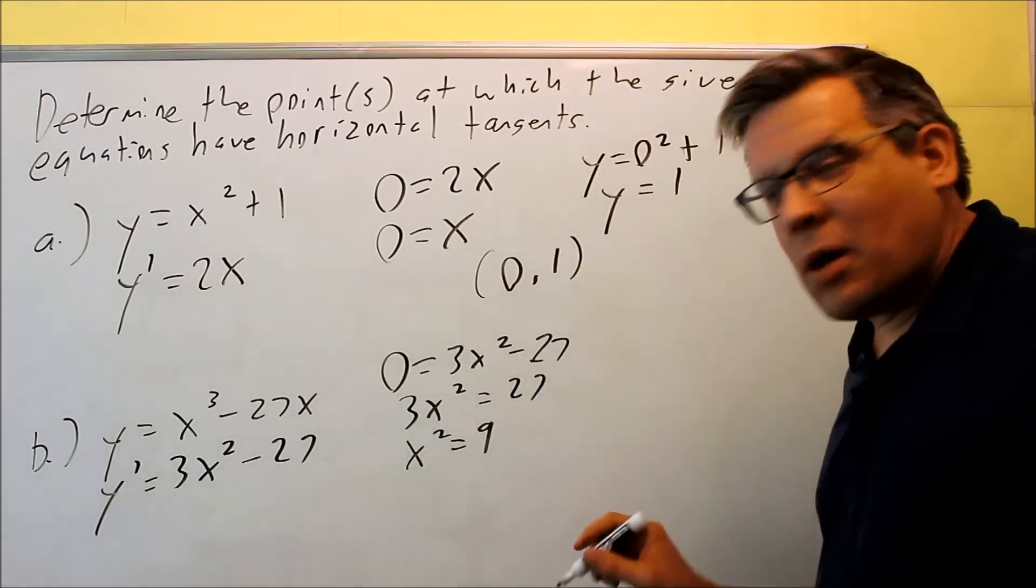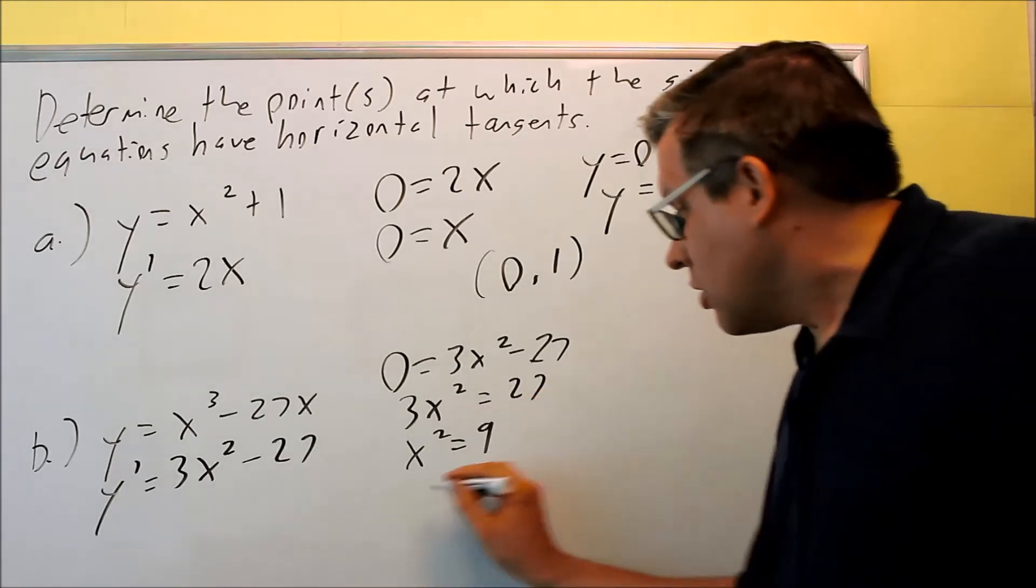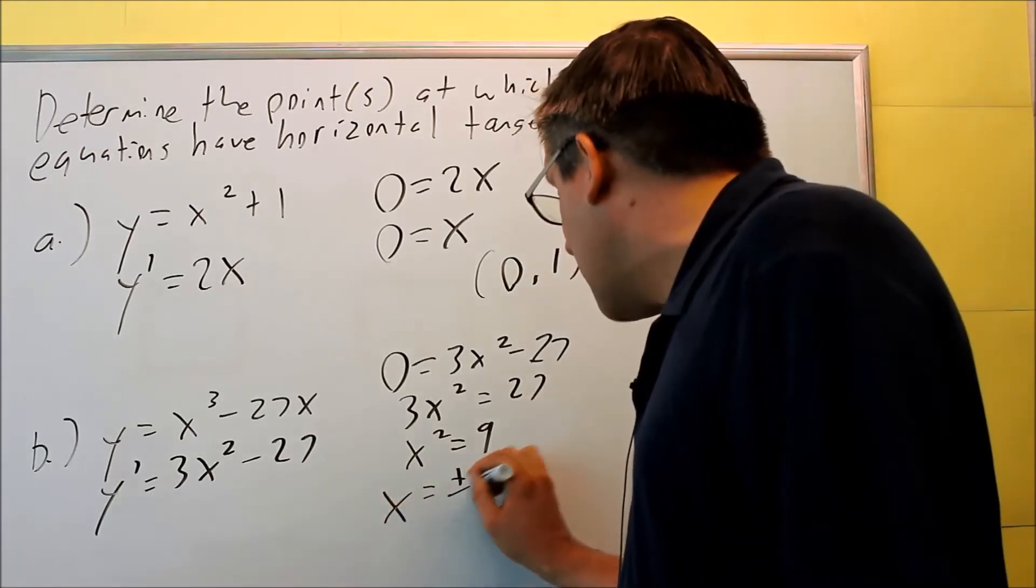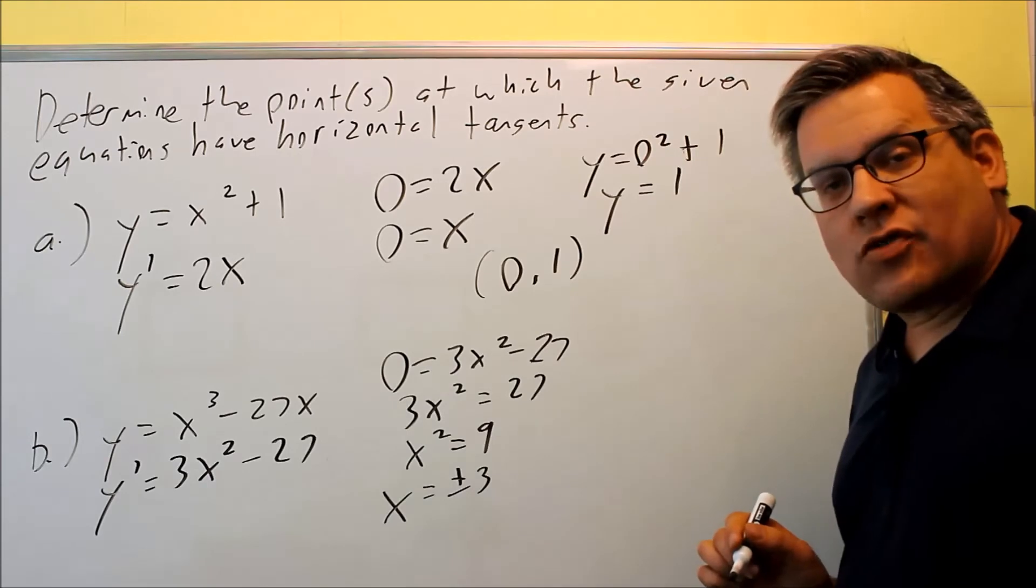When you square root both sides, remember that you're going to get two answers here, so we get plus or minus 3 as the two x values.